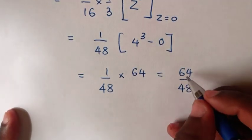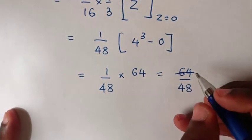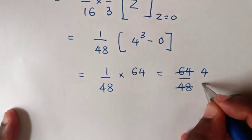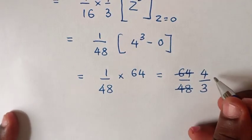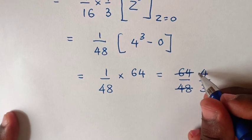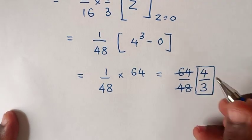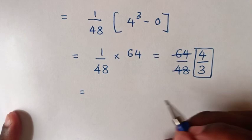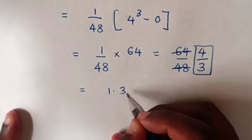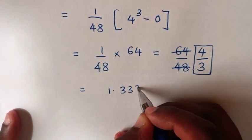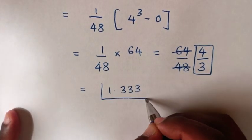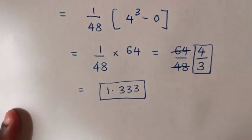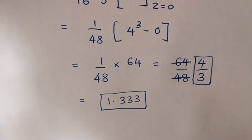To simplify 64 over 48: dividing both by 16 gives 4 over 3 as our final answer in fraction, which is equal to 1.333. So this is also the final answer. Don't forget these steps.